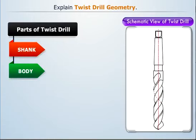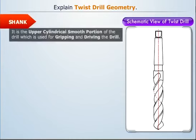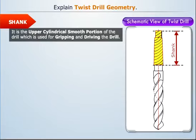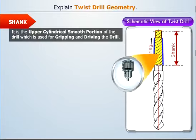Let's first study the shank. It is the upper cylindrical smooth portion of the drill which is used for gripping and driving the drill. It is tapered so that it can be easily inserted in the drill chuck.